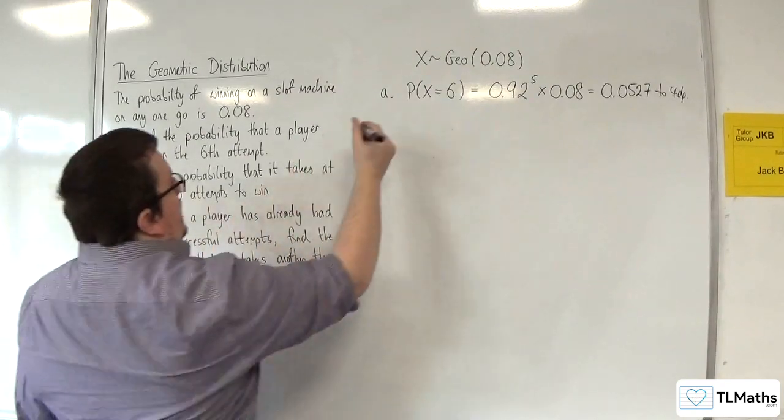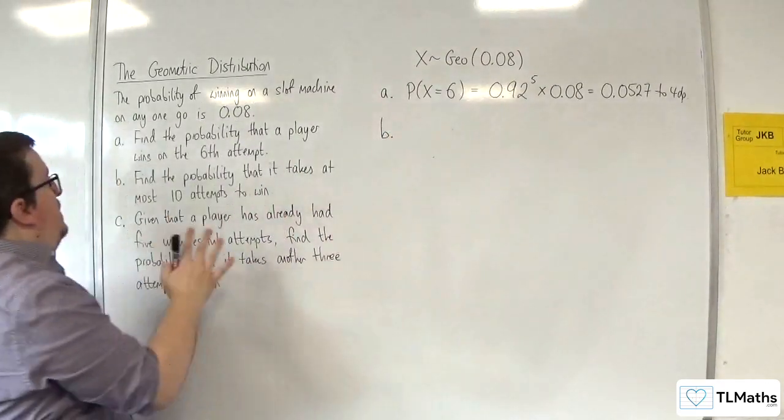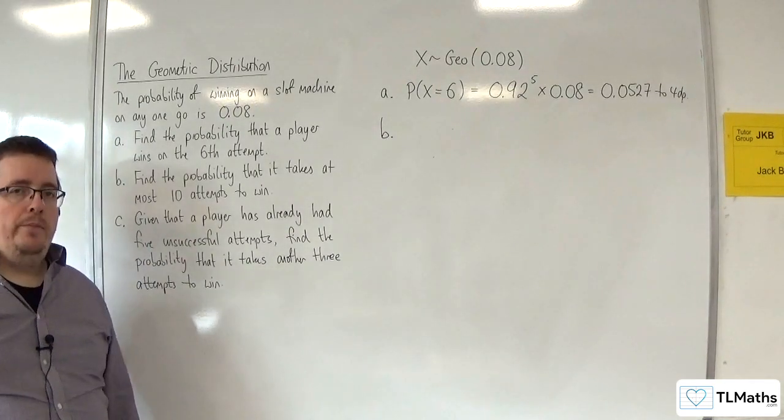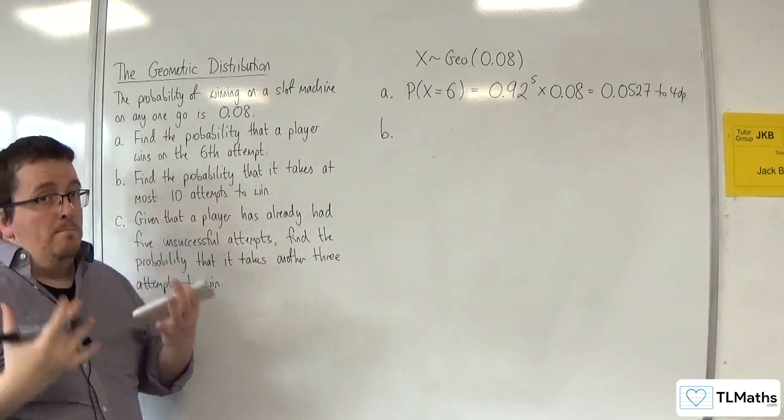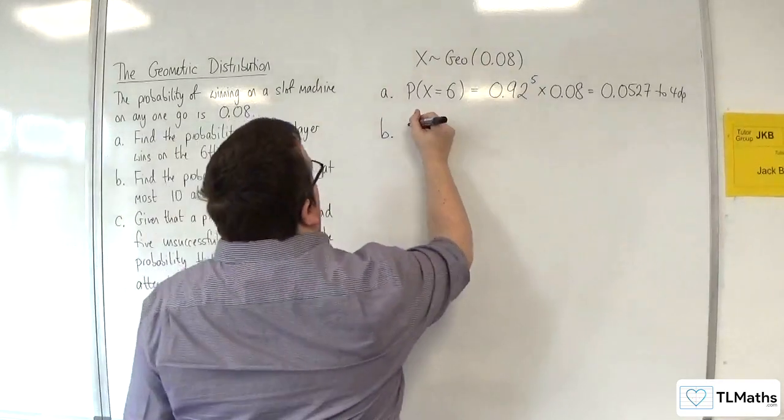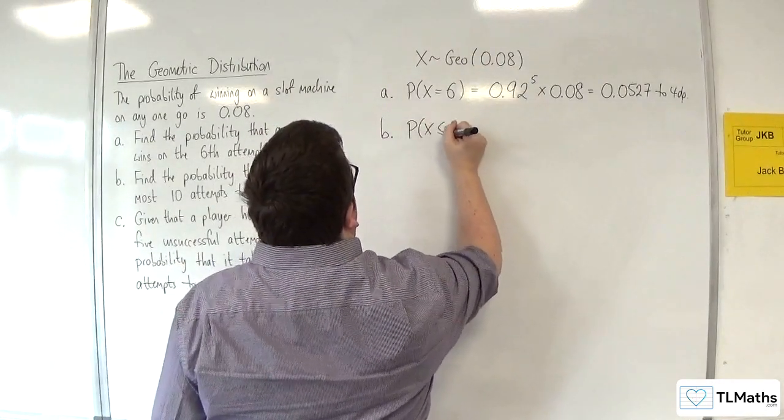Okay, so part B. Find the probability that it takes at most 10 attempts to win. So, at most 10 is the same as the probability of X being less than or equal to 10.